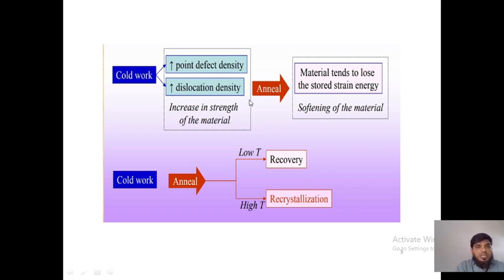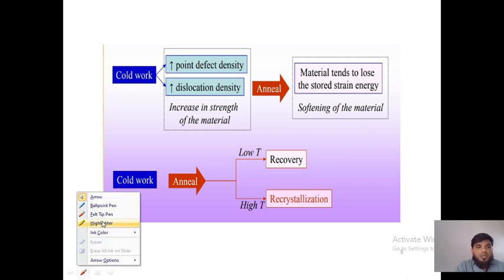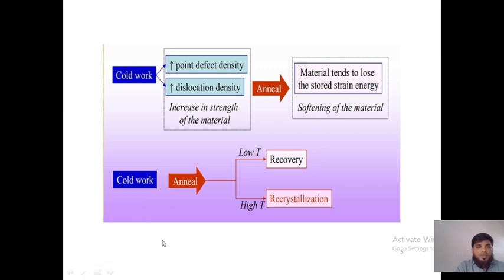Due to cold working, point defects and dislocation density increase, which improves the strength of the material, but the material becomes brittle. It has already undergone plastic deformation, so the next step can be deformation or breakage — making it brittle. After cold working, if annealing is applied, the material tries to lose its stored energy and become softened.